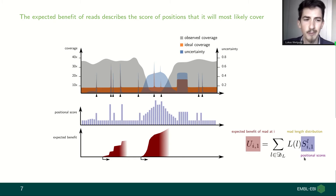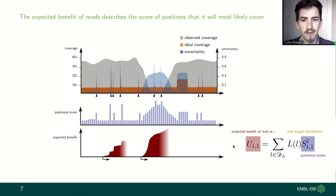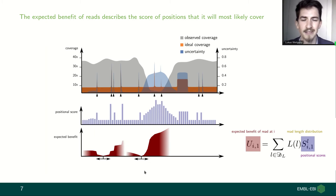If we combine these positional scores over some cumulative stretch that a read might cover, and take the product of the length distribution of read lengths observed so far in the sequencing run, we can get the expected benefit not just of covering a single site but the expected benefit of a read mapping at that position. Since reads can have either forward or reverse orientation, each site has two values for the expected benefit of a read starting at that position.